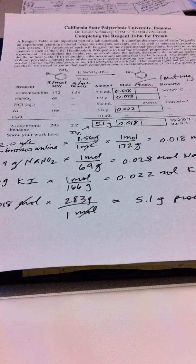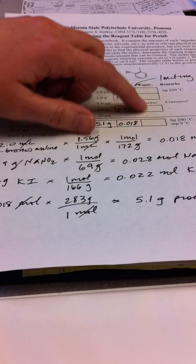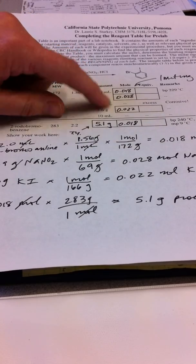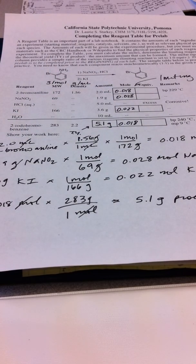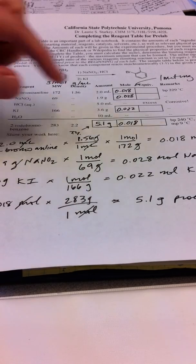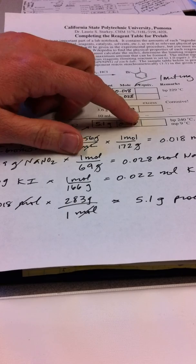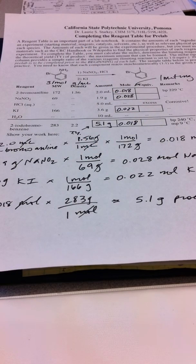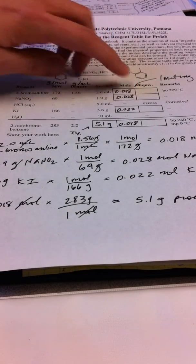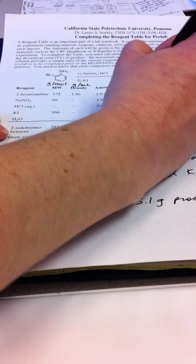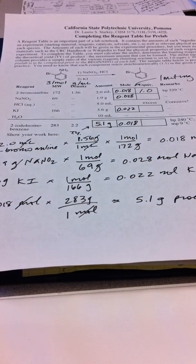Now the other column that I have here is called equivalents. This is a very handy column to have because the mole numbers that we're looking at are kind of random. They're all difficult to compare these numbers. So what we use for the equivalents is we write the ratio here of how much we have of one compound compared to another. What we do is we take whoever is the limiting reagent and we set that to be one equivalent. So let's say we have 1.0 equivalents of our 2-bromoaniline.